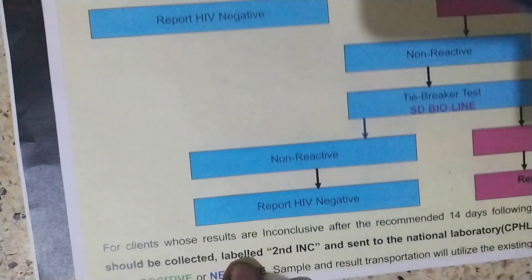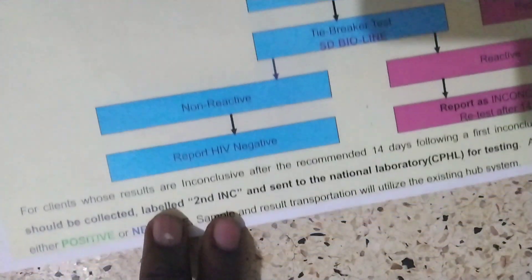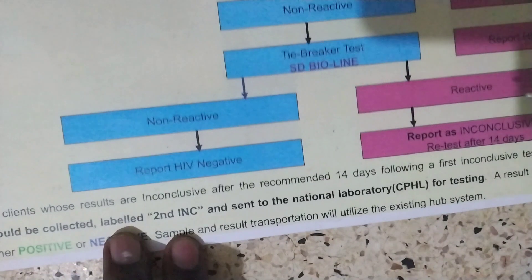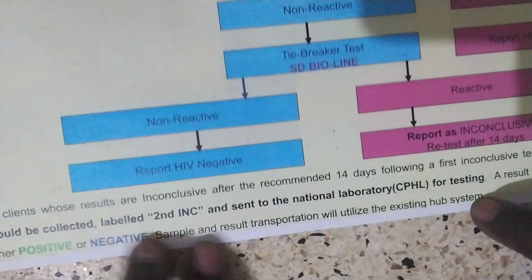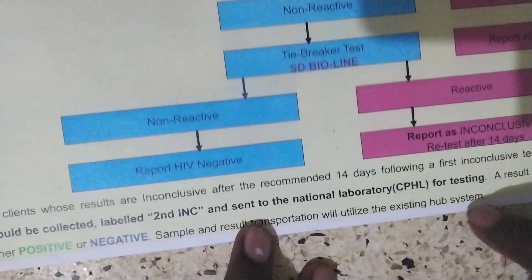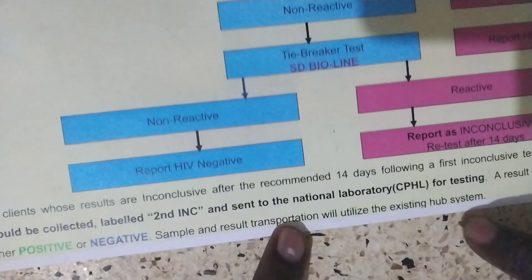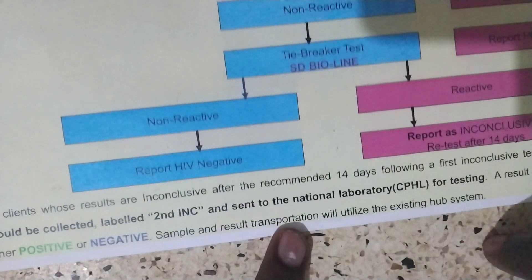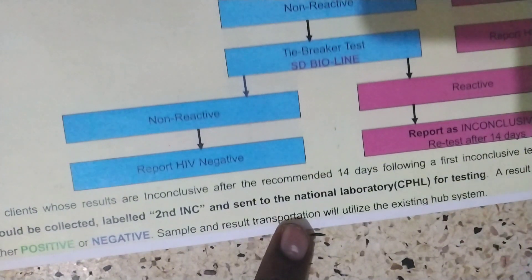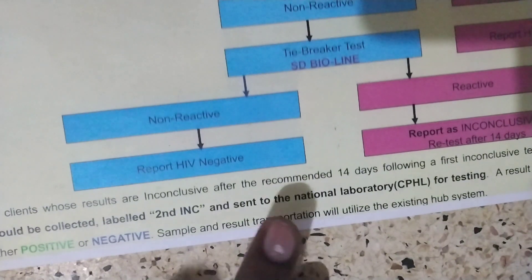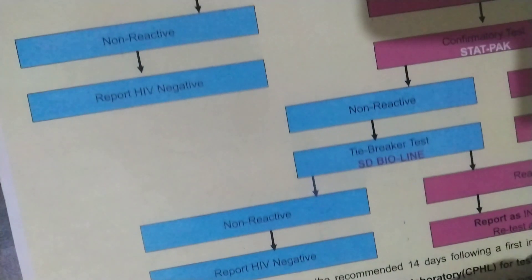If after 14 days the inconclusive result comes inconclusive again, we label the second sample inconclusive and take it to the national laboratory for testing. From there, the result will either come back positive or negative. This is the HIV testing algorithm for Uganda.